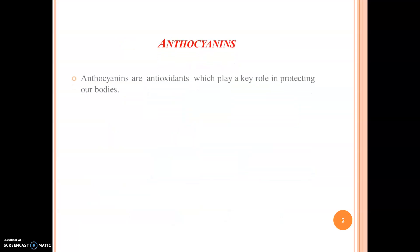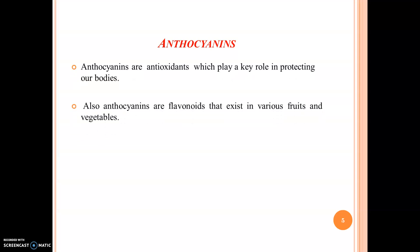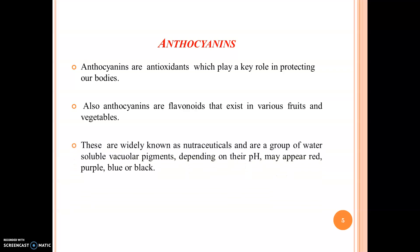Anthocyanins are antioxidants which play a key role in protecting our bodies. Anthocyanins are flavonoids that exist in various fruits and vegetables. They are widely known as nutraceuticals and are a group of water-soluble vascular pigments. Depending on the pH, they may appear red, purple, blue, or black. Over 600 anthocyanins are notably present in natural foods.